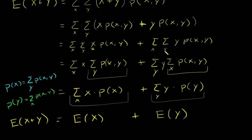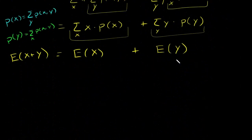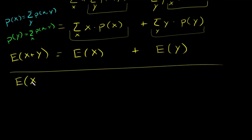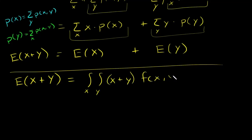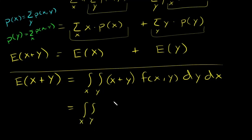Now we can show this exactly the same way using integrals. If x and y are both continuous, I would be integrating over both x and y of x plus y times the joint probability density function, with dy dx. Just make sure you're matching your integrals — we integrate over y and then over x. The order here does not matter. Very similar process: we distribute the probability density function, giving x times f(x,y) plus y times f(x,y), and then dy dx.